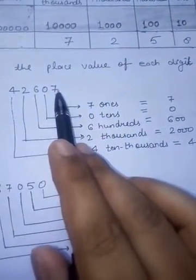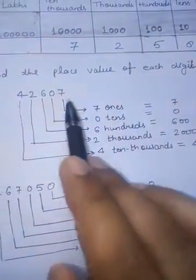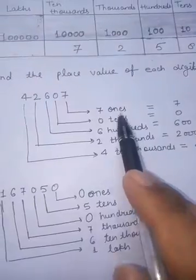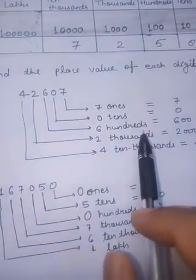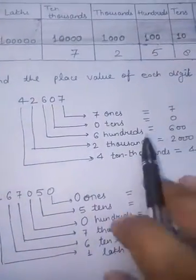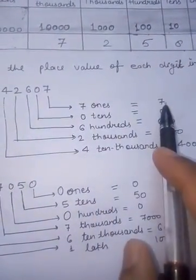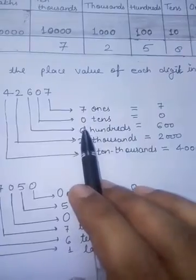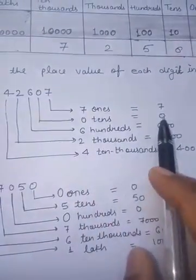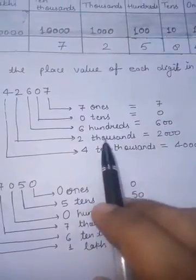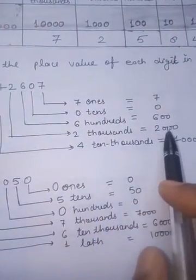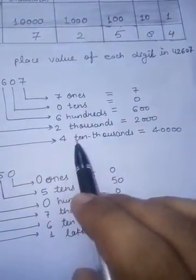Start with ones - it is here. Next, tens here, hundreds here, thousands here, ten thousands here. Then put the values: 7 × 1 = 7 ones, 0 × 10 = 0 tens, 6 × 100 = 600 hundreds, 2 × 1000 = 2,000 thousands, 4 × 10,000...